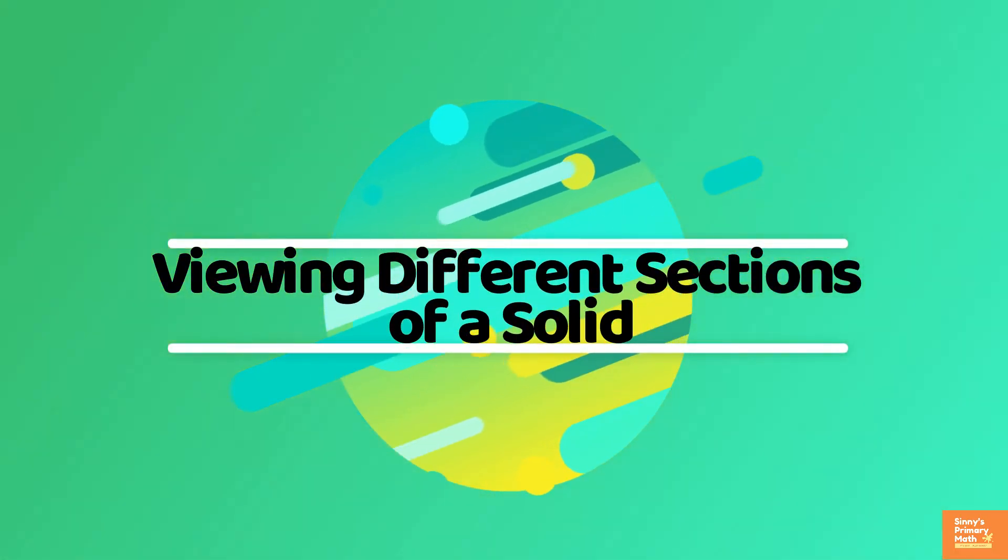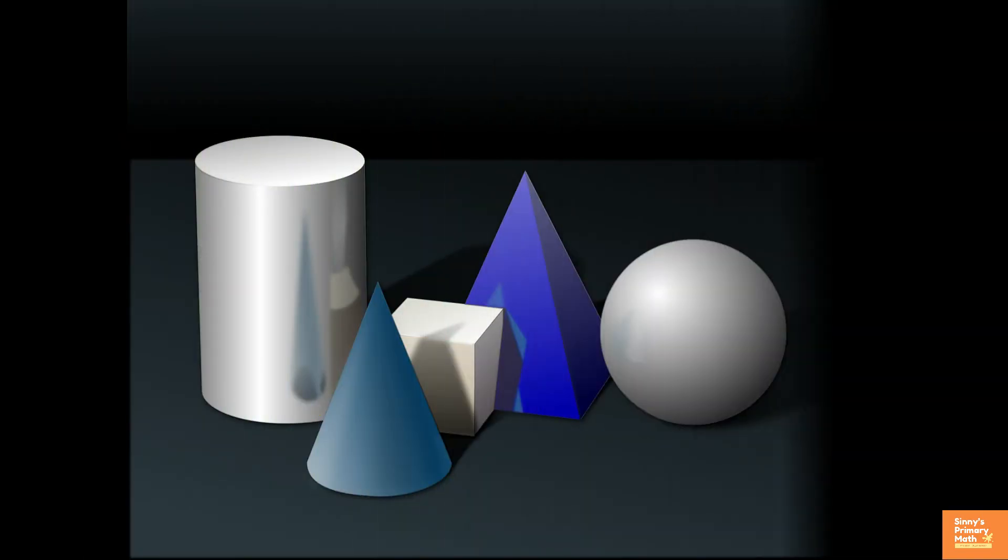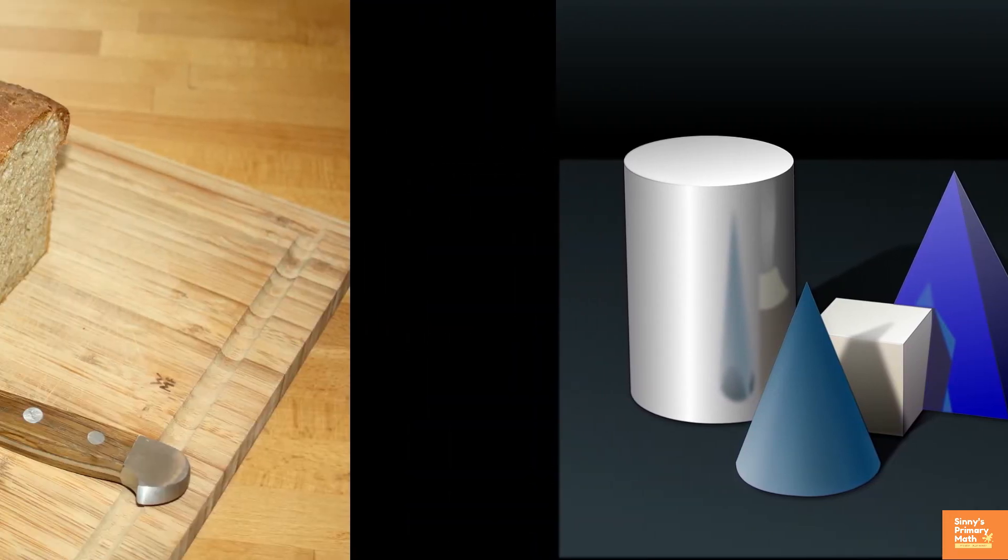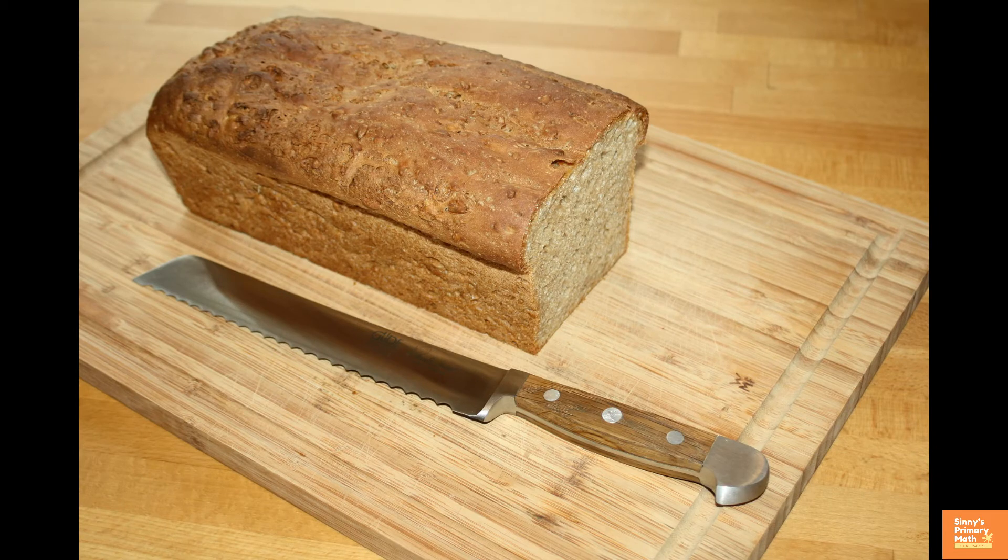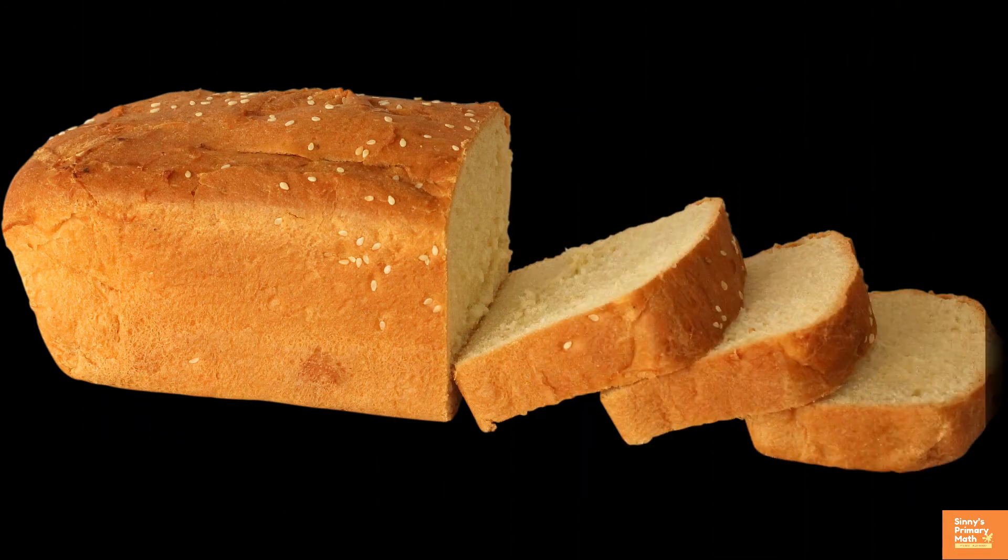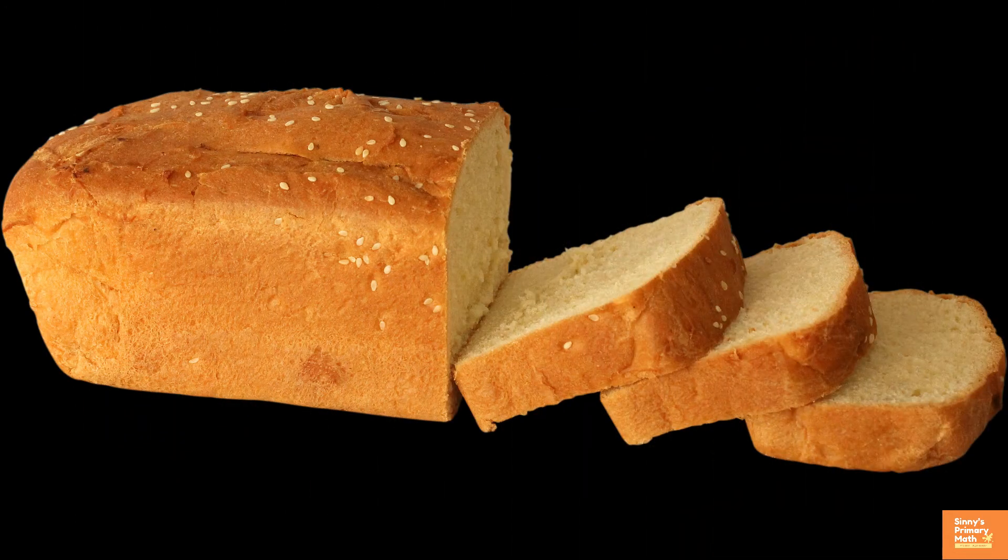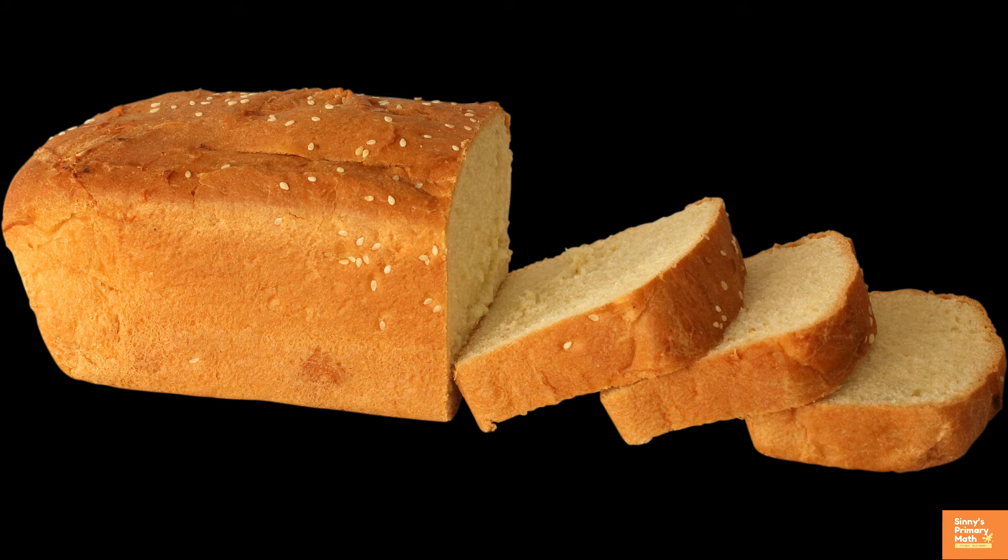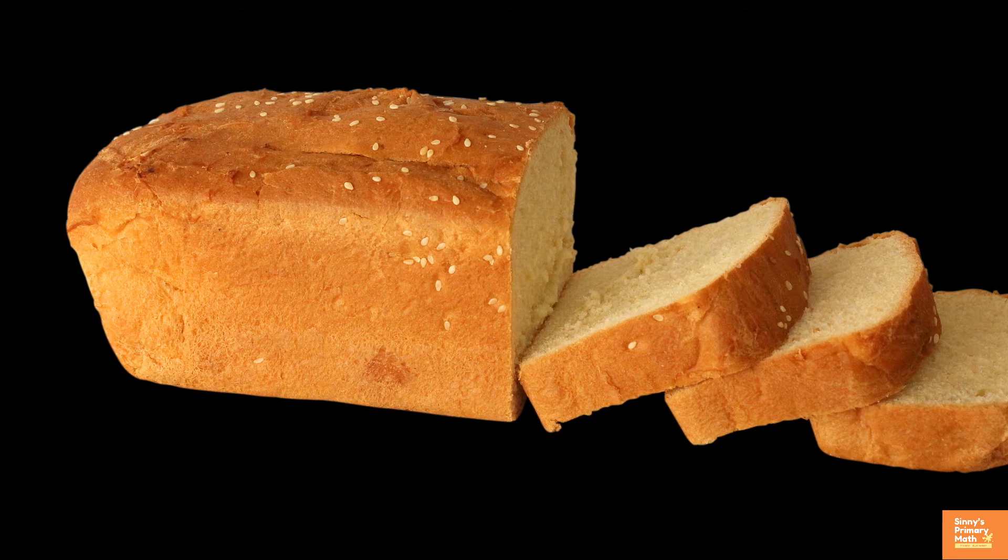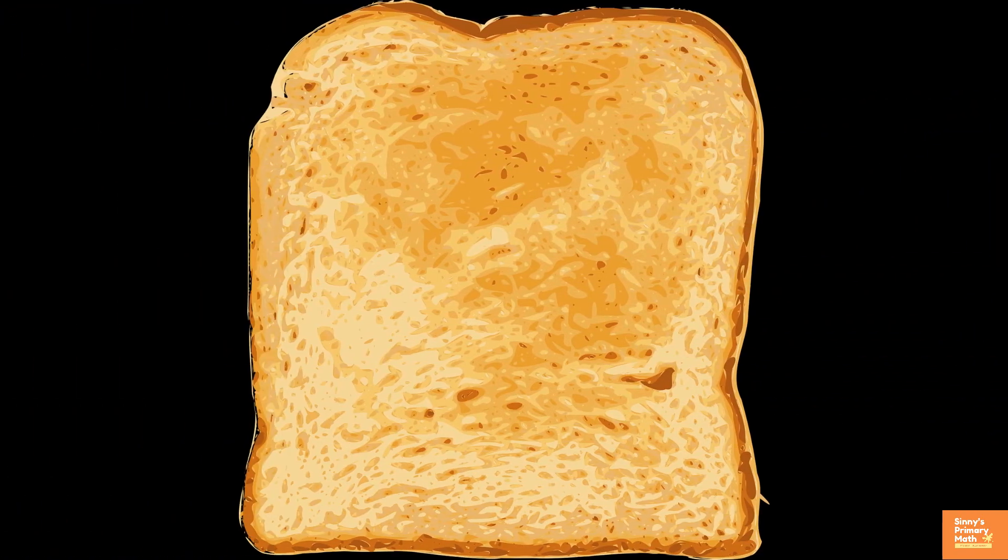Viewing different sections of a solid. 3D objects can be viewed in different ways. One way to view an object is by cutting or slicing. Look at this loaf of bread. It is like a cuboid with a square face. Now slice it with a knife. When you give a vertical cut, you get several slices as shown. This is a cross section of the whole bread.